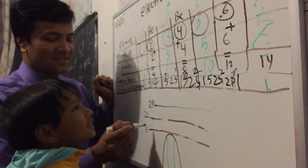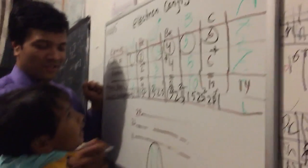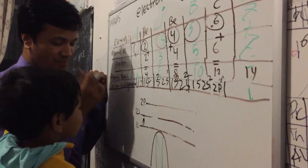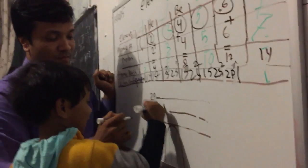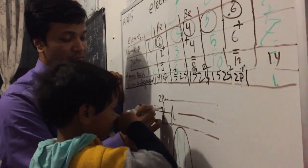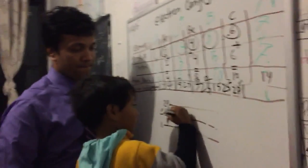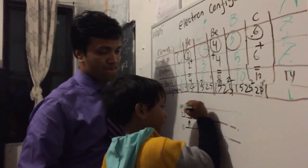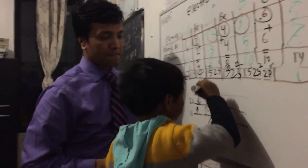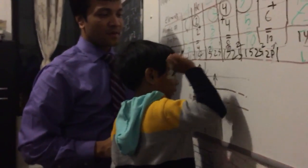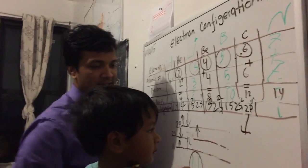Okay, so can you draw it? Daddy's gonna draw the first one, you're gonna draw the second one. One, two, three, four, five, six. Very good! Now write the configuration right here — write one s.